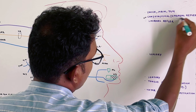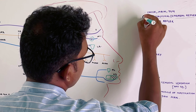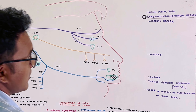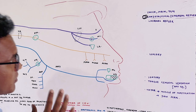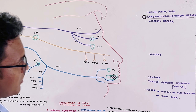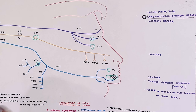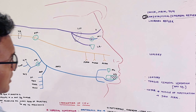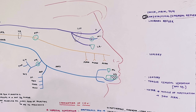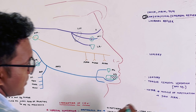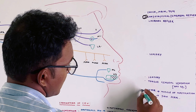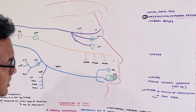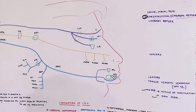We need to check the conjunctival reflex and corneal reflex. When examining the trigeminal nerve, we also need to check the jaw jerk and muscle mass examination — assessing the muscles of mastication.